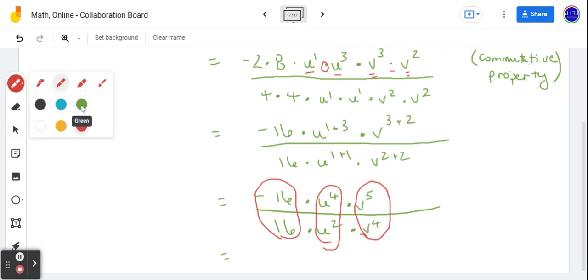So in our final step, in our final few seconds. So negative 1 multiplied by u to the 4 minus 2. Multiplied by v to the 5 minus 4. And you always subtract in the order in which you get a positive exponent. So negative u squared multiplied by v to the 1.